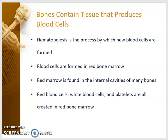Hematopoiesis is the process by which new blood cells are formed. Blood cells are formed in red bone marrow. Red marrow is found in the internal cavities of many bones. Red blood cells, white blood cells, and platelets are all created in red bone marrow.